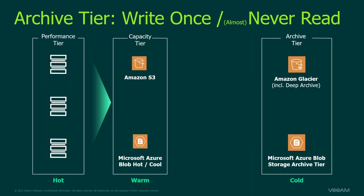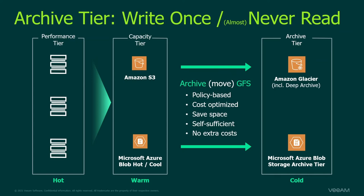We move GFS data to the archive tier. All data that resides in the archive tier is stored for the longer term, so if you have to delete data before its expiration date you will incur extra storage costs. We move data based on GFS to the archive tier — backup data older than 90 or 180 days, depending on your early retrieval settings.